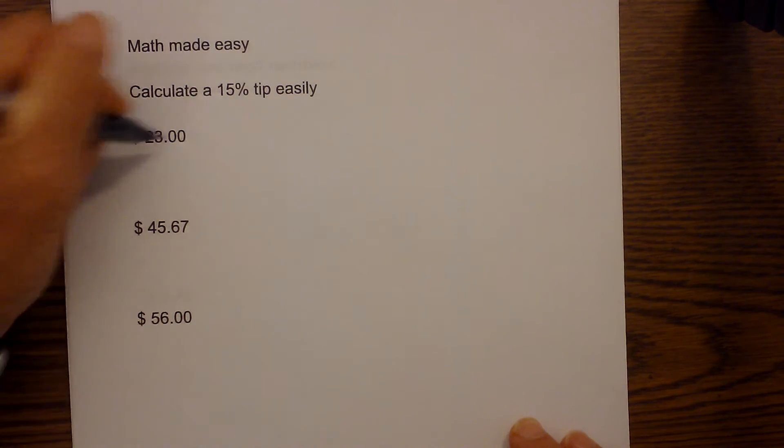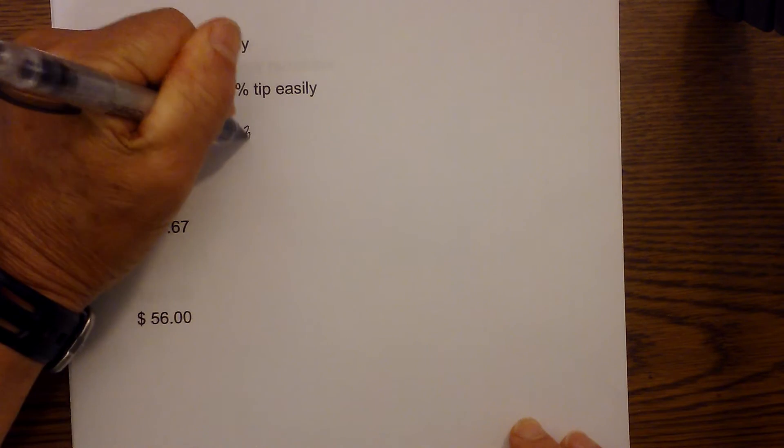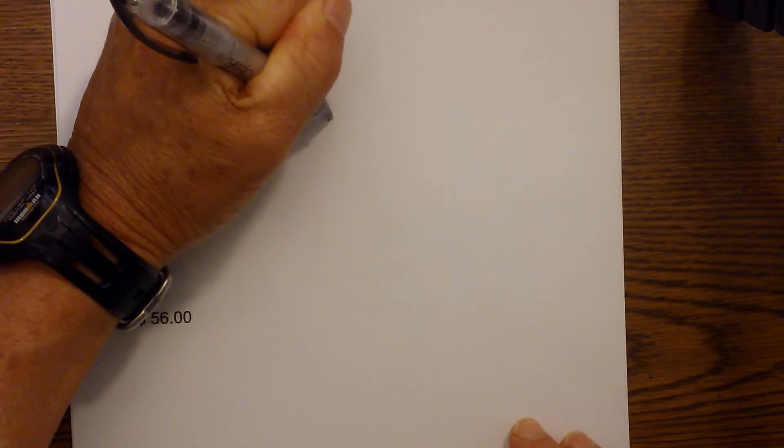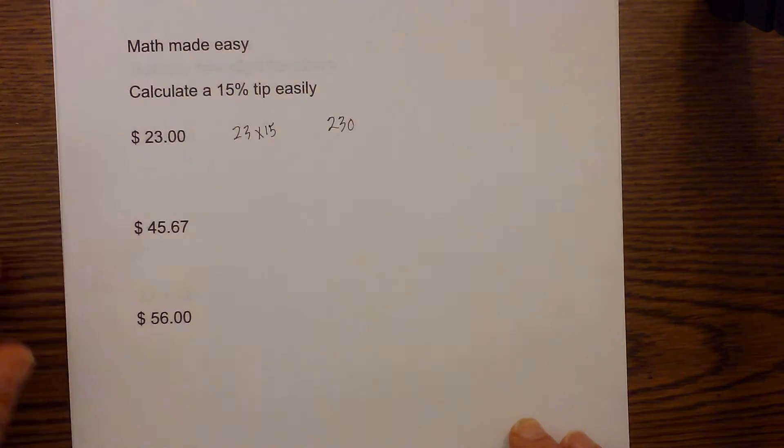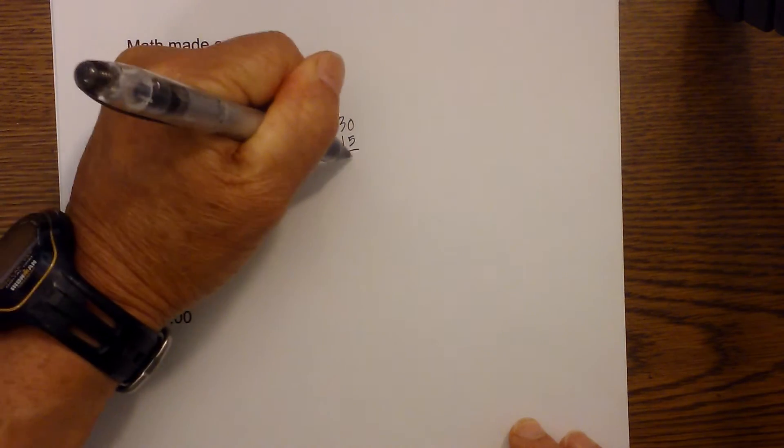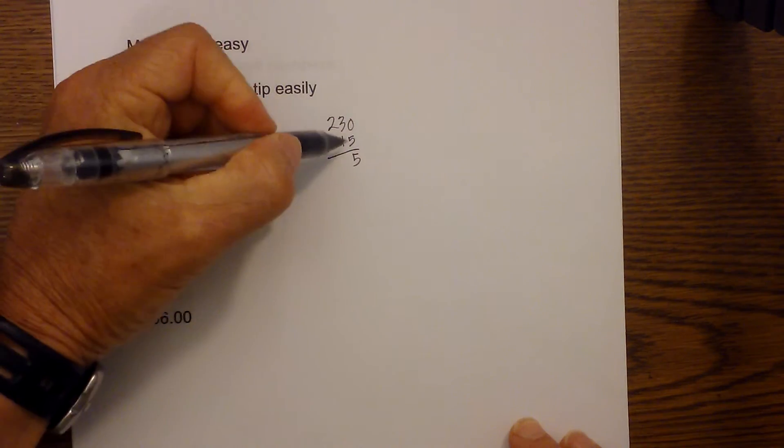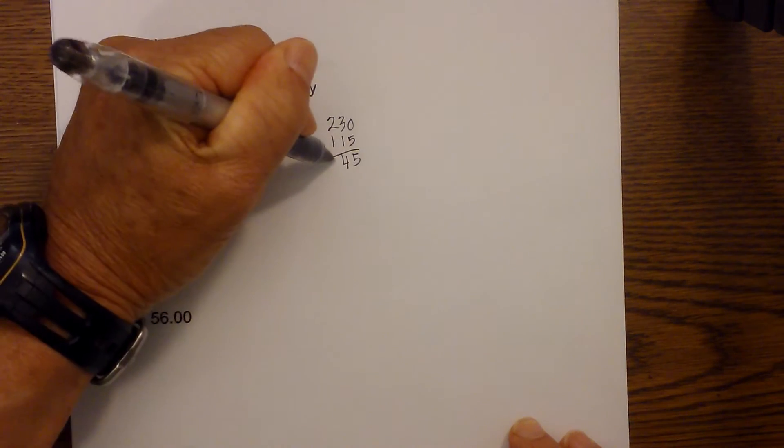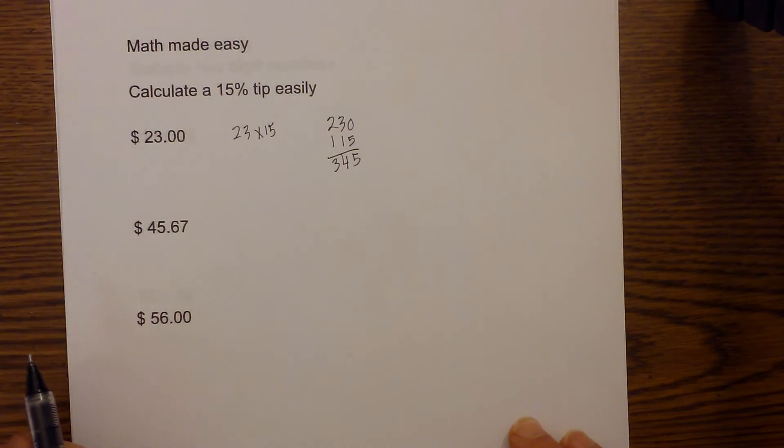So let me give you an example. To multiply 23 times 15, what you can do is first multiply 23 times 10 so it becomes 230, and then take half of that which is 115, and then you add these together. So this becomes 5, 4, 3, 345.